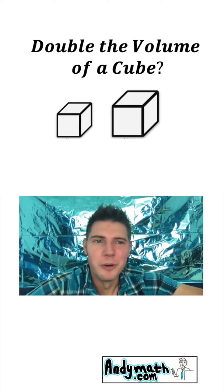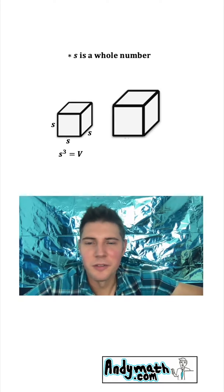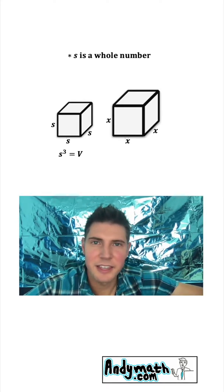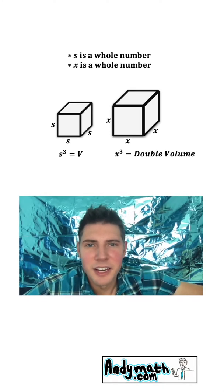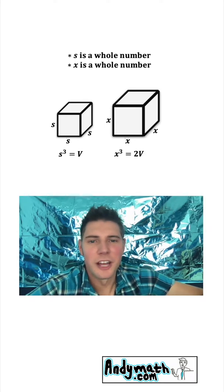Let's talk about doubling the volume of a cube. We have two cubes, one with edges of length s, and we'll make s a whole number. The volume of this one is s cubed. We'll do another cube with the edges of length x, where x is a whole number, and the volume of that is x cubed, and we want to try to double the volume from the previous one. So we'll call that 2v.